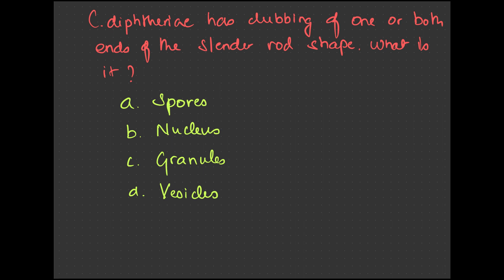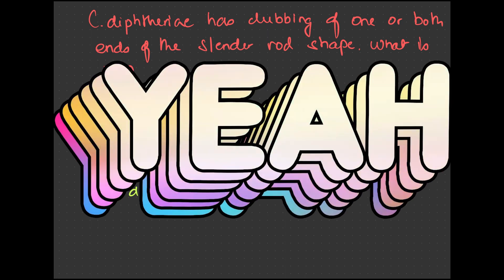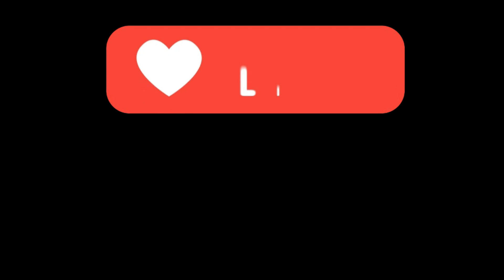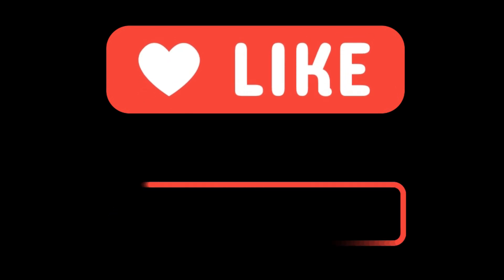Diphtheria has a slender rod shape with clubbing on one or both ends. What is this clubbing — a spore, nucleus, granule, or vesicle? It is a granule. The bacterium is highly gram positive and the granules are metachromatic, also called volutin or polyglucose granules.